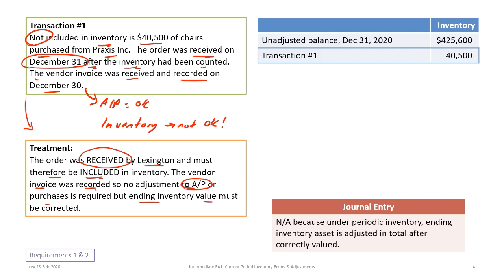There is no adjustment required for the vendor invoice. Under periodic inventory, we save all inventory adjustments until the end, once ending inventory is correctly valued. We start building our correct inventory balance at $425,000 and increase it by $40,500 for the chairs missing from inventory.